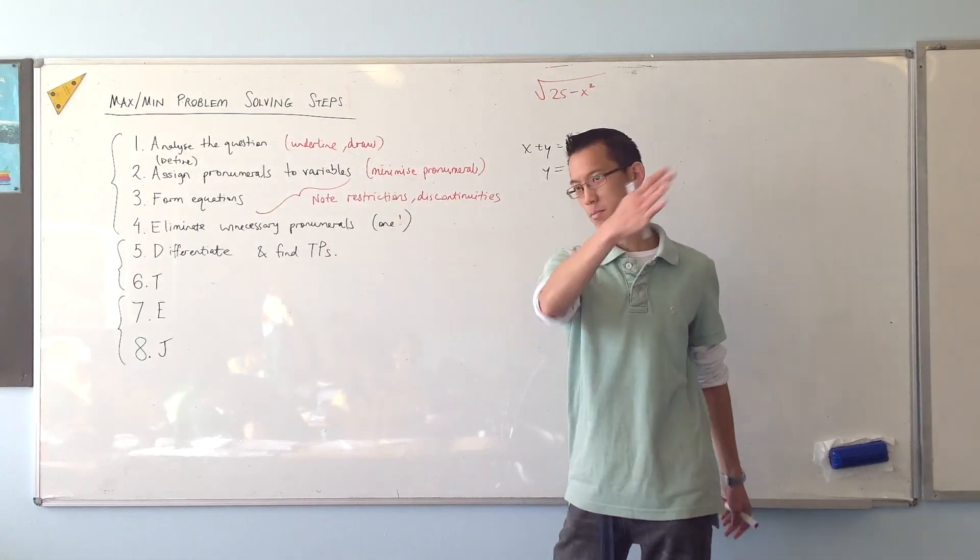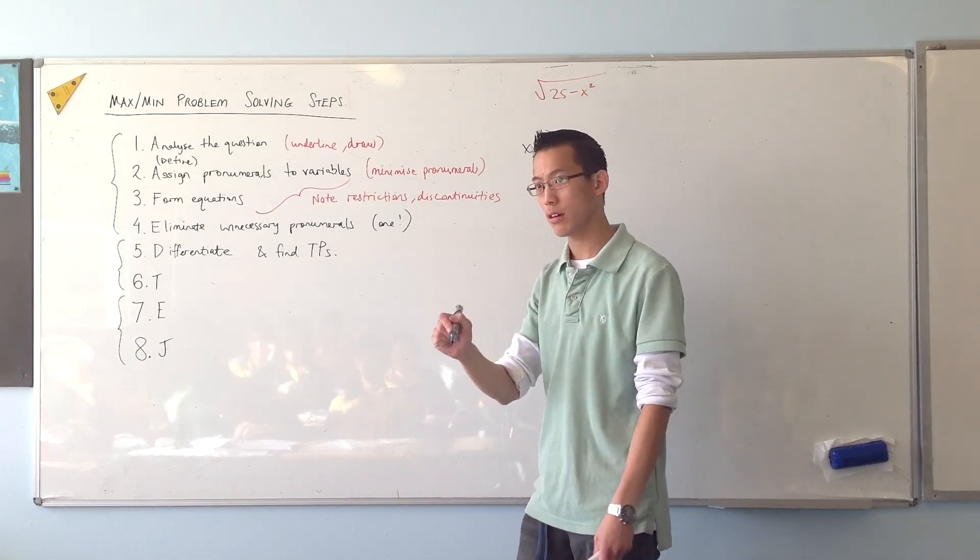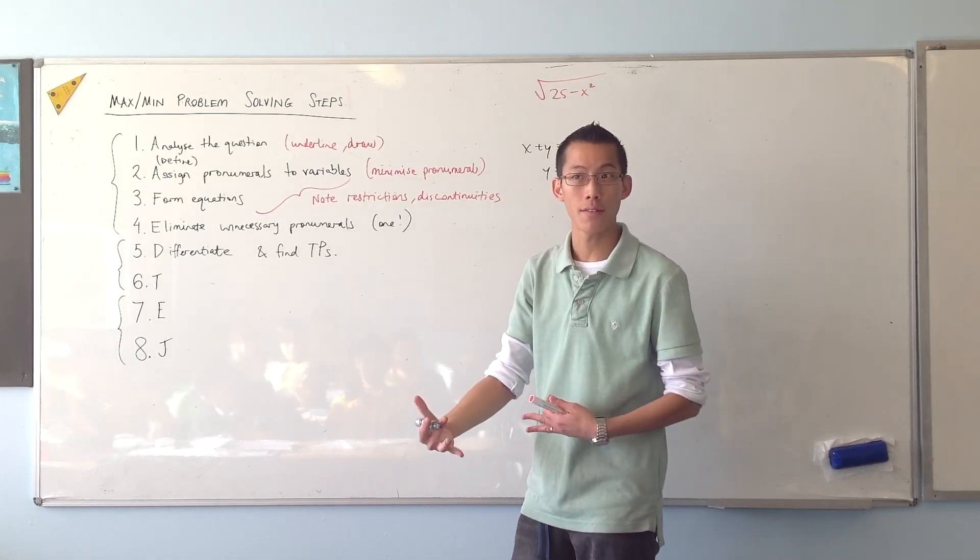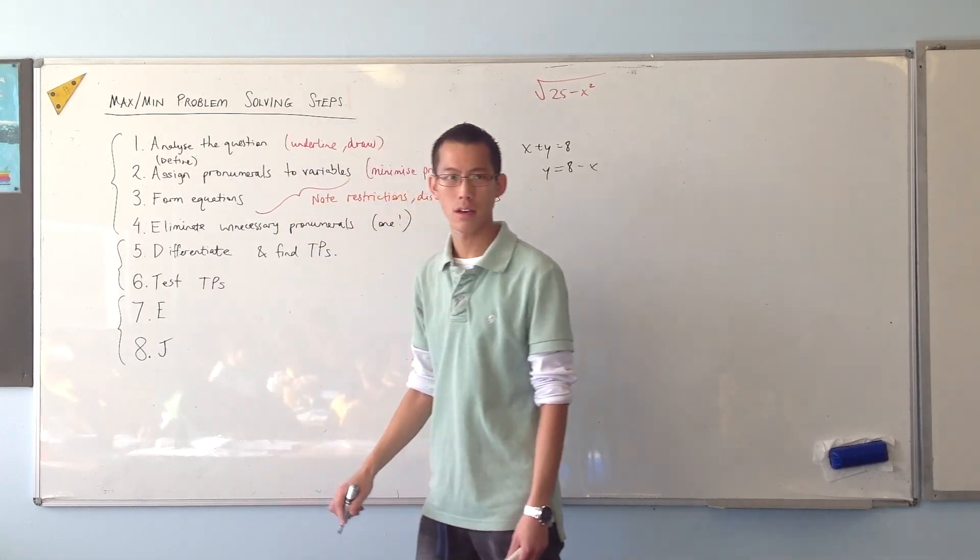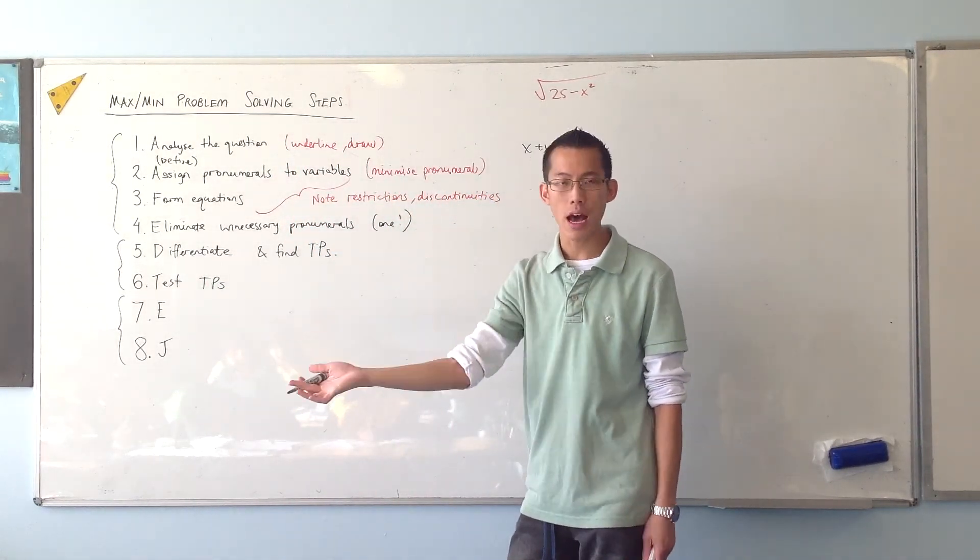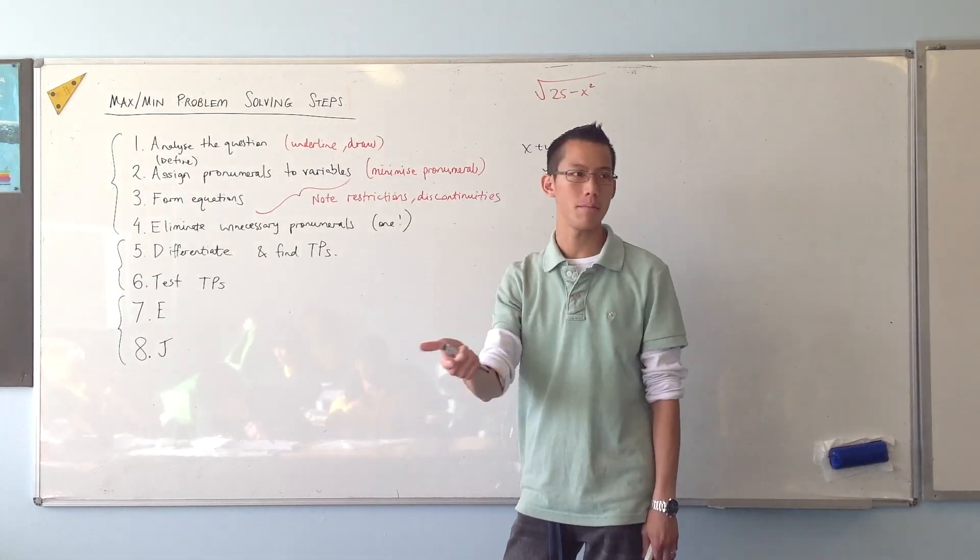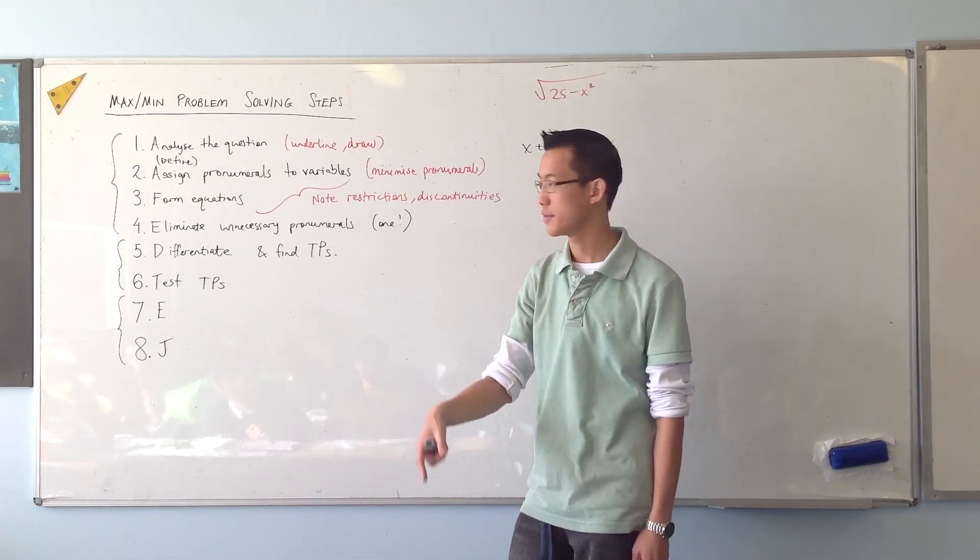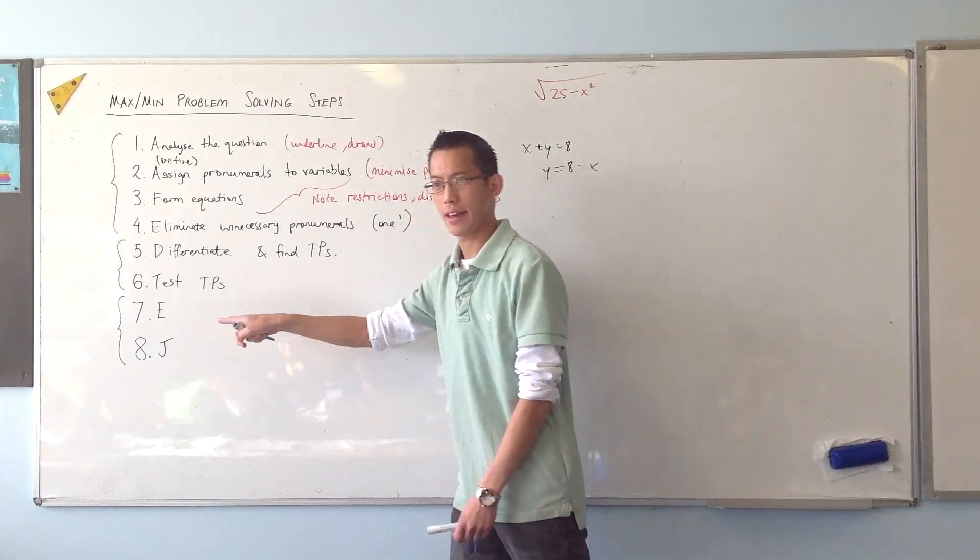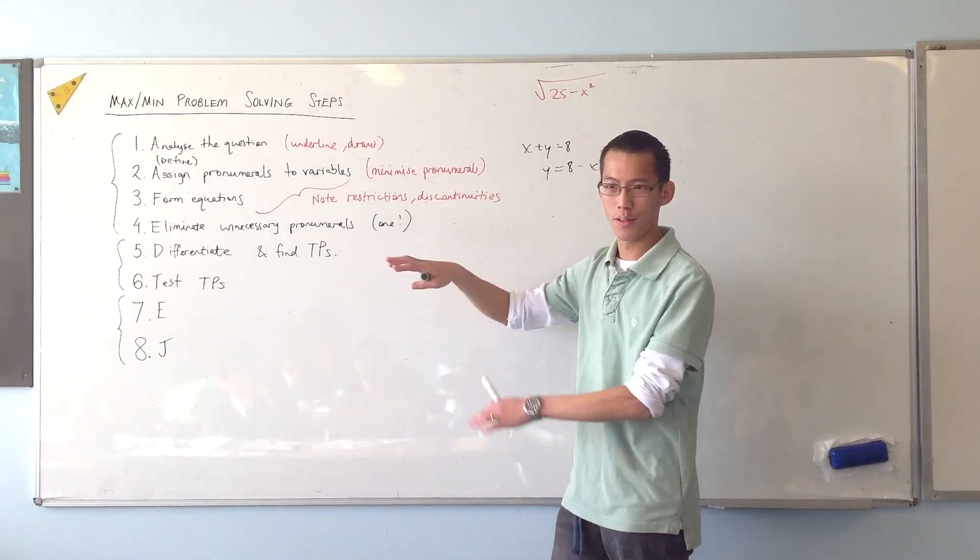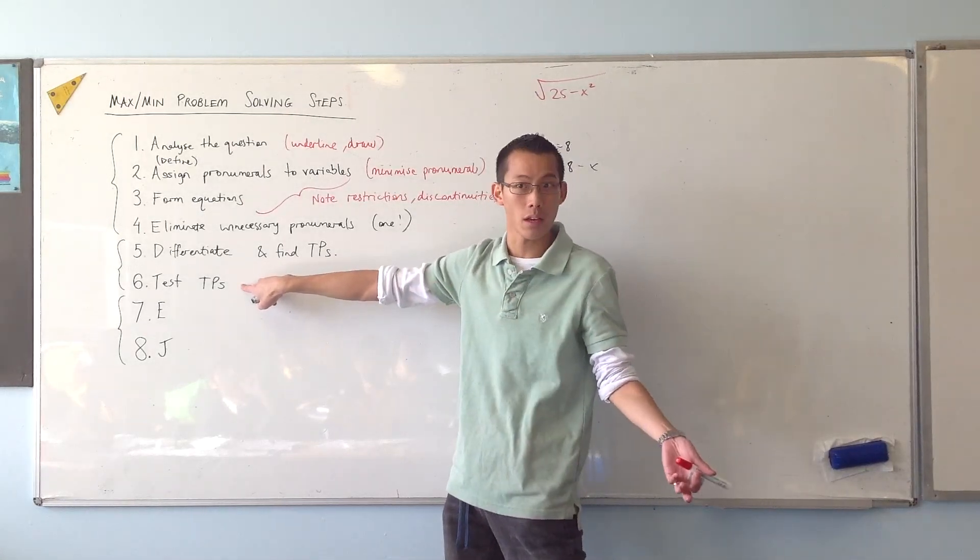All right now, once you find your turning points, you find one at y equals 4 or y equals 3.9 or whatever it is, you've got to show that they're the kind of turning point you're after. So you're going to have to test the turning points. Use first derivative on either side, use a second derivative, whatever method you like. You've got to show that it's a maximum or it's a minimum or whatever it is that you're after.